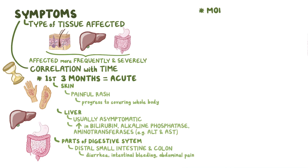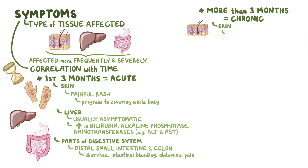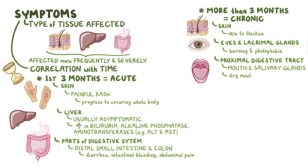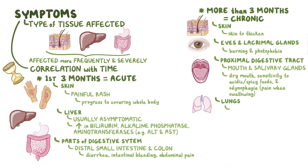If graft-versus-host disease persists for more than three months following transplantation, it's considered chronic. Once again, the skin is most commonly affected chronically, and it can cause the skin to thicken. It can also affect the eyes and lacrimal glands, causing a burning sensation and photophobia, or difficulty tolerating bright light. Chronically, the proximal digestive tract can also be involved, particularly the mouth and salivary glands, causing dry mouth, sensitivity to acidic or spicy foods, and odynophagia, or pain when swallowing. Less frequently, chronic graft-versus-host disease can affect the lungs, causing shortness of breath and cough, and the muscles, causing muscle cramps and weakness.